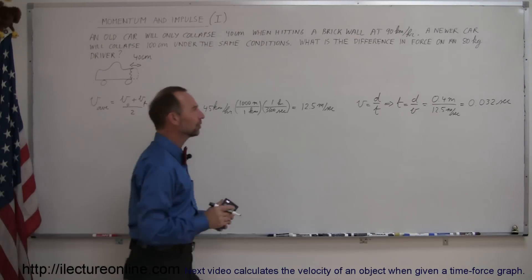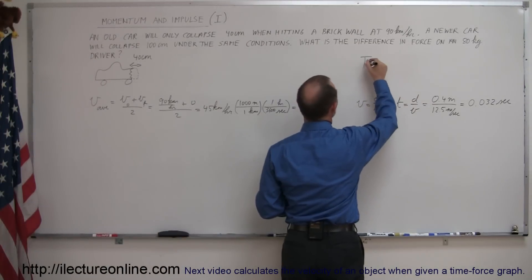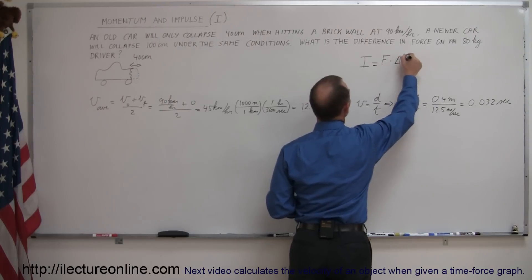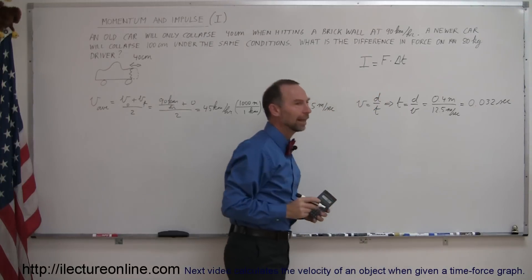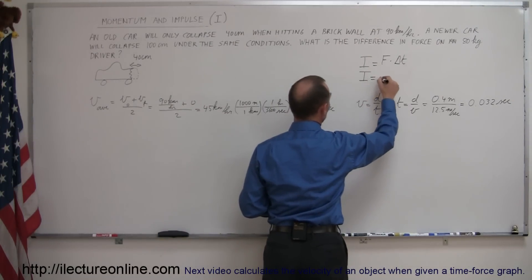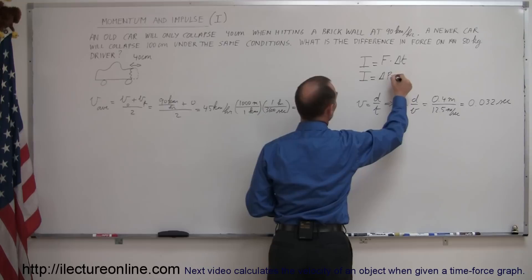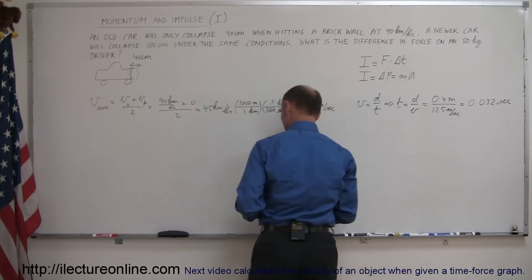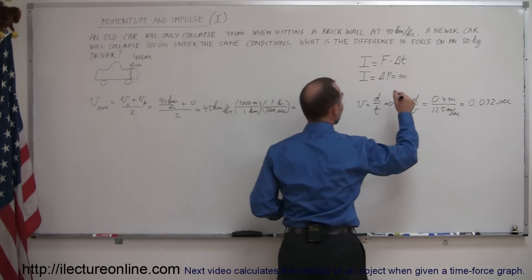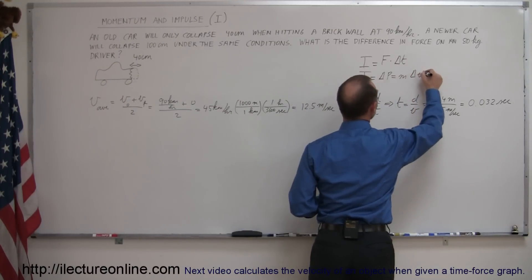Remember impulse, the definition of impulse is equal to the force times the amount of time that the force is acted upon, and since the impulse is also defined as the change of momentum, the delta P, which is equal to M times delta V.